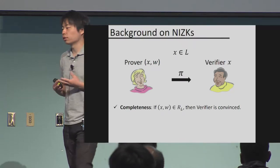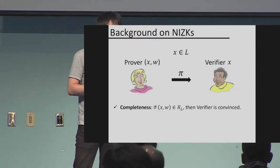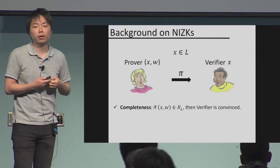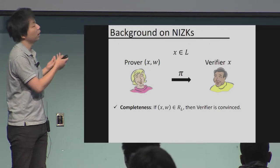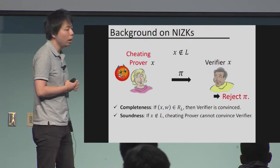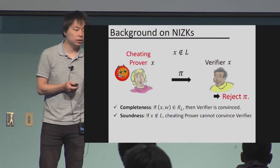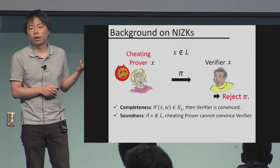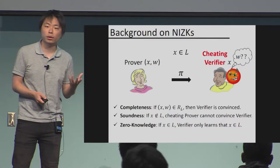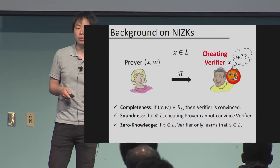As background on NIZK — I'm sure everybody has seen this at some point during these crypto conferences — a prover wants to prove to the verifier that she knows a witness corresponding to statement X in a language. Completeness says the proof π should verify correctly. For soundness, if a cheating prover has a statement not in the language, it should not verify. And for zero knowledge, the proof π does not leak any information on the witness other than the fact that the statement is in the language.